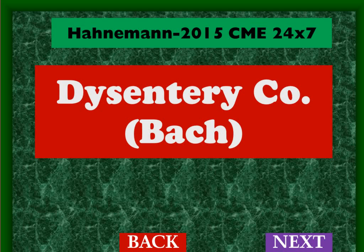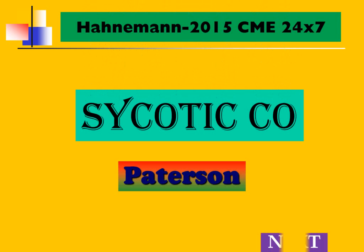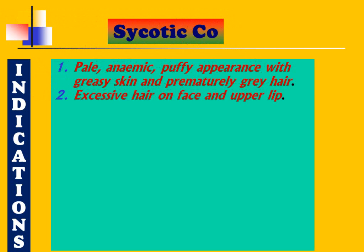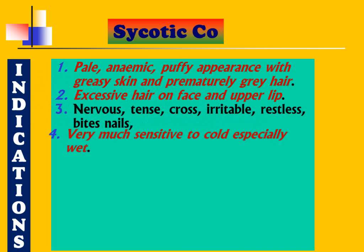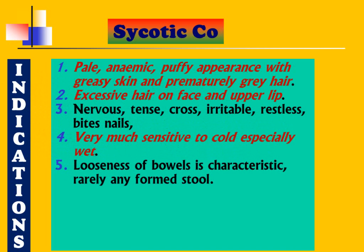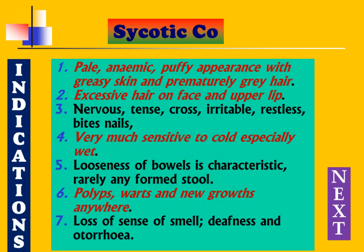The last remedy is Psorinum Co (Psychoticum). The picture is quite simple: pale, anaemic, puffy appearance with greasy skin and prematurely grey hair, excessive hair on face and upper lips. Symptoms of Psorinum and Medorrhinum are found here, as the name Psychoticum suggests. The patient is nervous, tense, cross, irritable, and restless, biting nails, very sensitive to cold especially wet cold. Looseness of bowels is characteristic — rarely forming stools. This distinguishes constipated bowel nosodes from diarrhoea-type bowel nosodes.